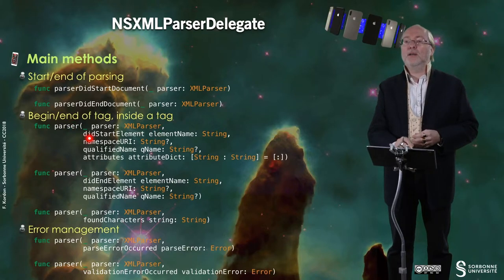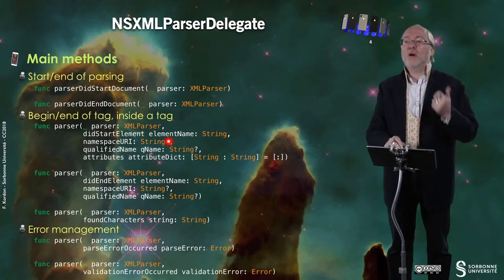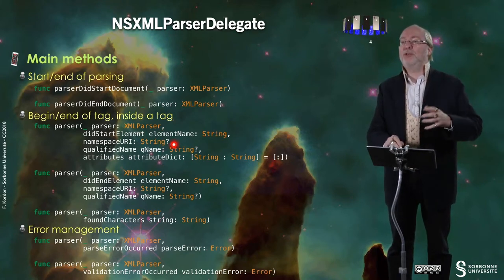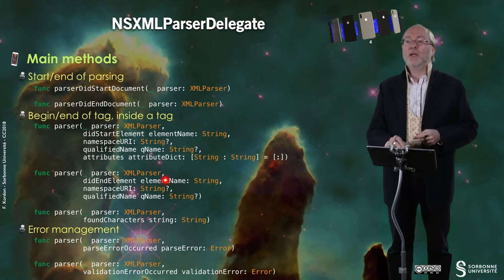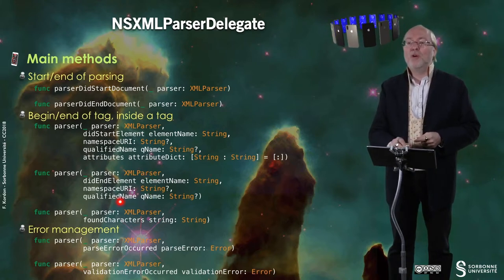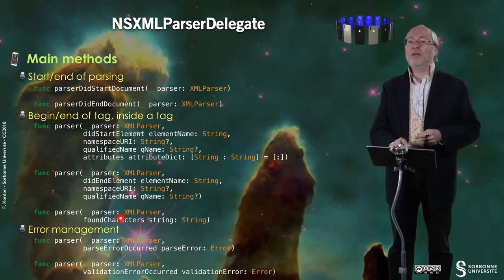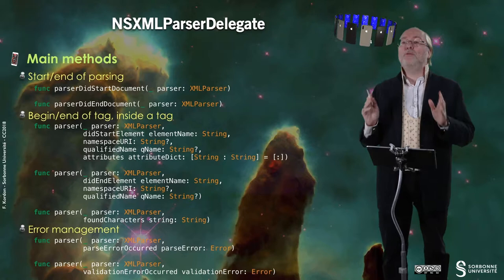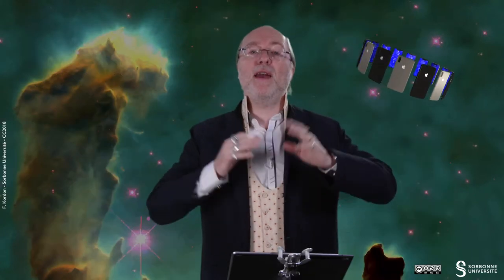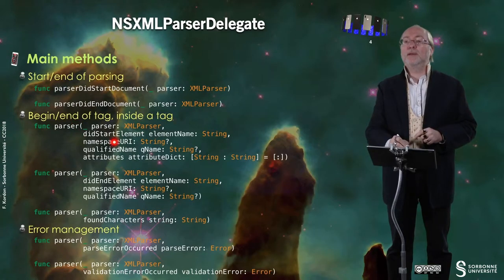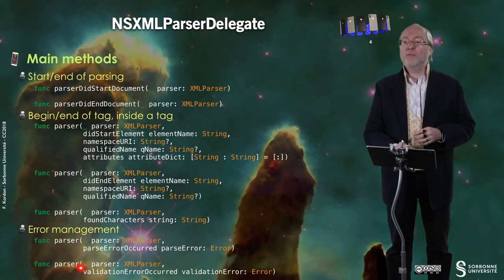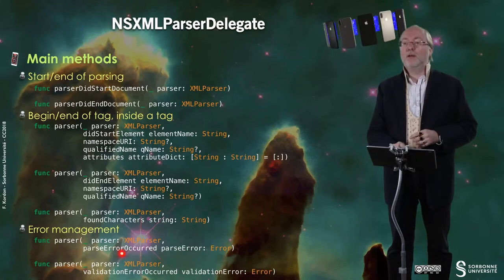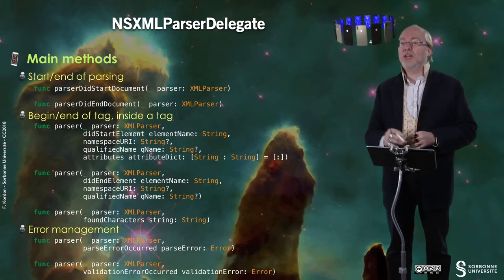When you just started an element, you have the element name, the namespace, and lots of information. You also have the attributes of this element as a dictionary. Then you go through the end of this element with another method, and in between you found some characters. If you have a very long file, you may have between two begin and end elements several found characters calls. And then you have some methods to manage errors — a method that is invoked when you have an error or when you have a validation error.